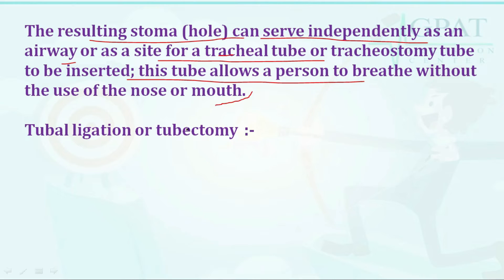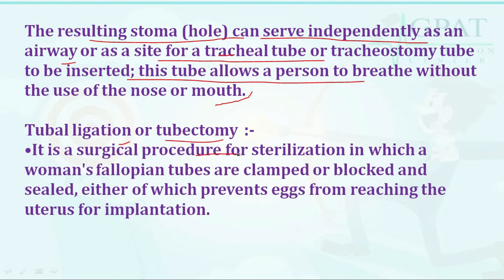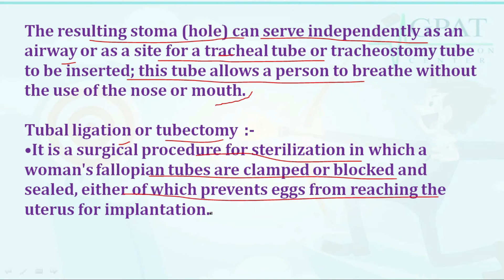Tubal ligation or tubectomy is a surgical procedure for sterilization in which a woman's fallopian tubes are clamped, blocked, or sealed, preventing the egg from reaching the uterus for implantation. This is the correct answer — tubectomy is the method of permanent contraception.